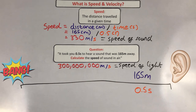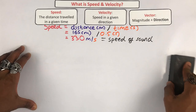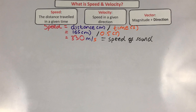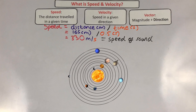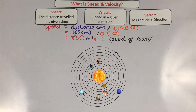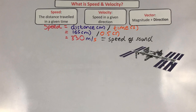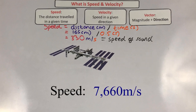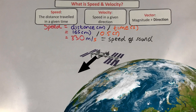Velocity is speed in a given direction, therefore velocity is a vector quantity. This means that if an object is moving in circular motion, although the speed is constant, the velocity is constantly changing. For example, the International Space Station has a constant speed of 7,660 meters per second but a continuously changing velocity due to its changing direction as it orbits the Earth.